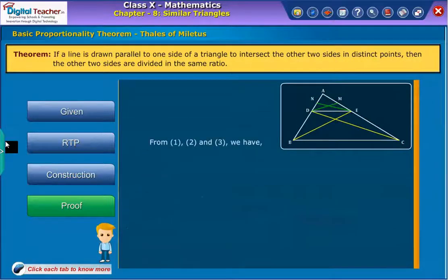From equations 1, 2, and 3, we have obtained AD/DB is equal to AE/EC.